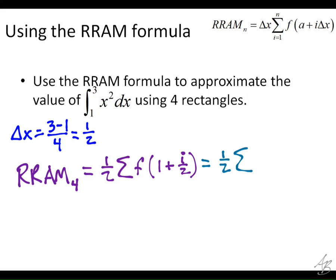So this is going to equal 1 half times the sum. I should probably put my limits on the sum, shouldn't I? i is going to range from where to where? 1 to 4. So 1 half times the sum as i ranges from 1 to 4 of 1 plus i over 2 squared.